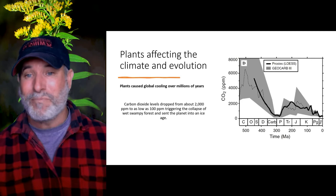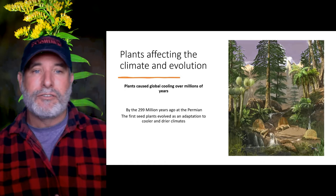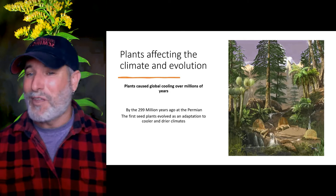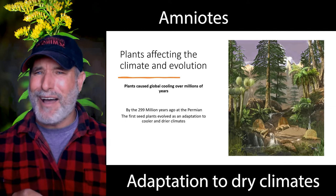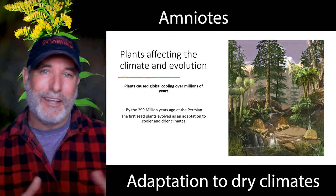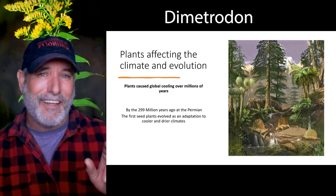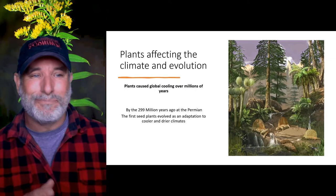When you change the climate, life adapts. Plants evolved what is called seed plants by about 300 million years ago, so as we enter the Permian period we start getting seed plants. We also get the first amniotes — you, me, birds, and reptiles are all amniotes, with internal reproduction and an egg-based system. If you look at this picture, you can see Dimetrodon — that lizard-like creature with big fins. That's actually an ancestor to mammals, not a reptile.